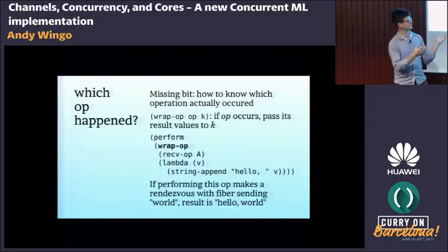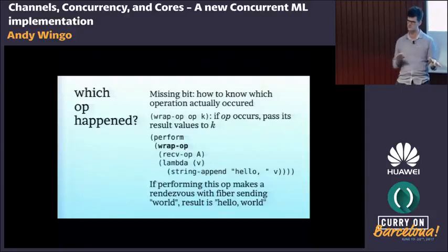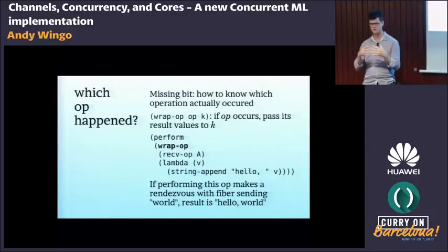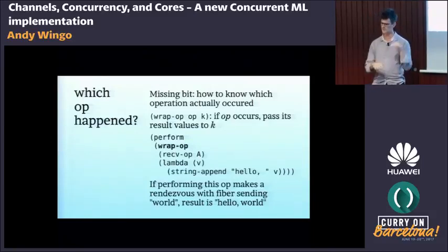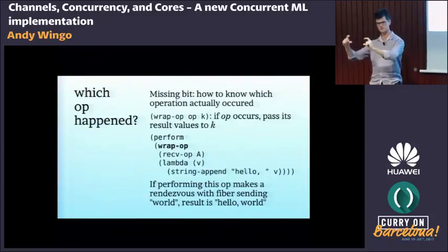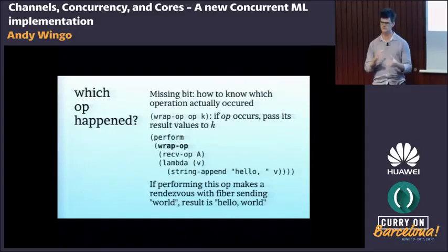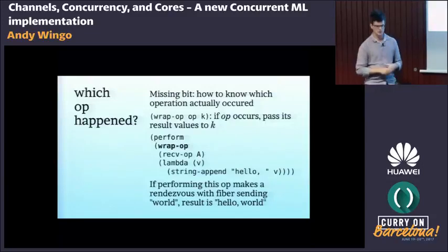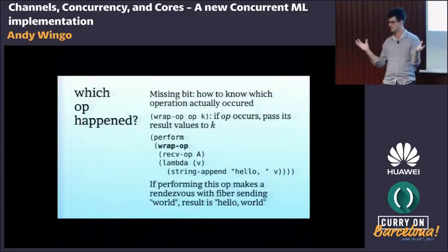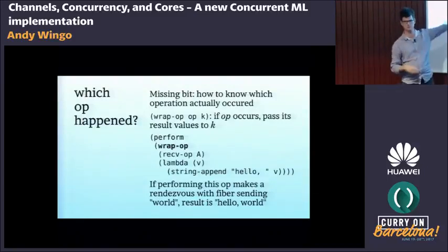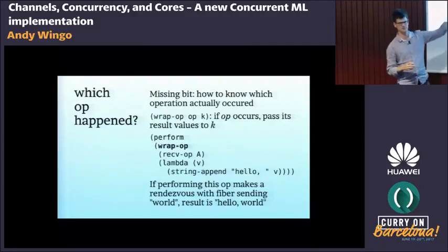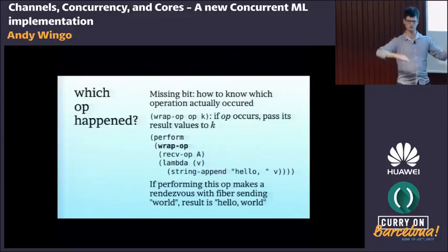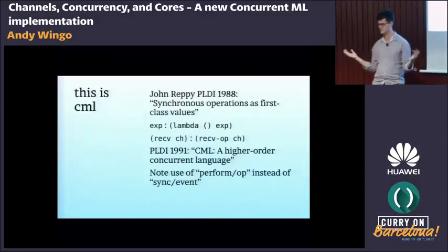Go solves this problem by integrating select as a language primitive — different cases with code right there. But if you try to compose select from other primitives in your language, you need to annotate: build up data saying if this operation occurs then pass its result to this continuation. You need to wrap the operation. We might want to wrap a receive with something that prepends 'hello' to the result — send 'world', get 'hello world'. At this point we've made CML.